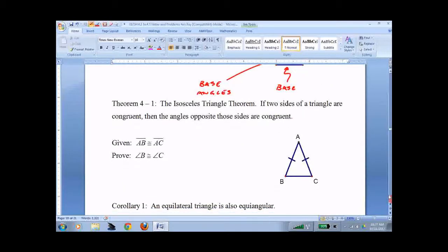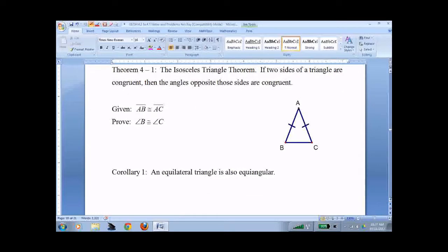So this is the big isosceles triangle theorem. If two sides of a triangle are congruent, then the angles opposite those sides are congruent. So if I give you these two sides, we also know that these are congruent. I have to prove it though. So if I give you those two sides, what we do is draw a line down the middle.